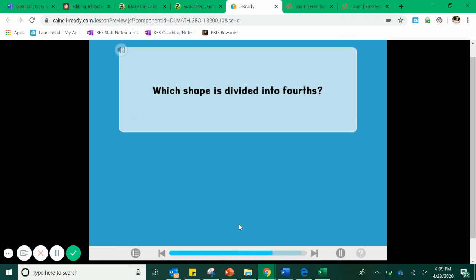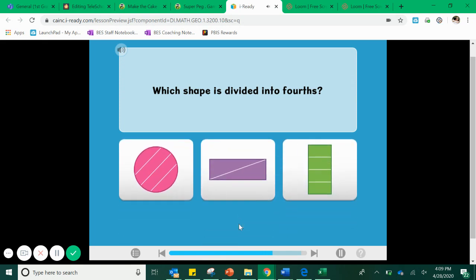All right our next question is coming. We're zooming right through because we have already done so much practice for partitioning. Which shape is divided into fourths? Now again I'm already thinking to myself before I even look at my answers fourths. Four is in that word four. This must be asking me for four equal parts also known as quarters. Well that helps me eliminate or get rid of this purple rectangle because that's divided into one, two equal parts those are called halves. Can't be the rectangle.